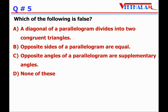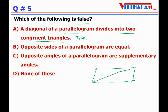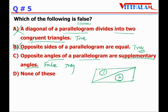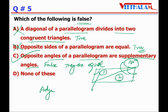Next: Which of the following statements is false? A: A diagonal of a parallelogram divides it into two congruent triangles — true, so A is not the answer. B: Opposite sides of a parallelogram are equal — also true, equal as well as parallel, so B is not the answer. C: Opposite angles of a parallelogram are supplementary — false, they are equal. Adjacent angles sum to 180 degrees. So C is the answer, the false statement.